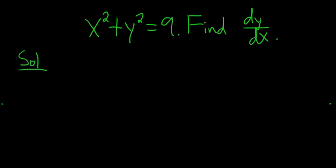So to find dy dx, what we'll do is we'll take the derivative of both sides of this equation with respect to x. Starting with this term here, the derivative of x squared is simply 2x.